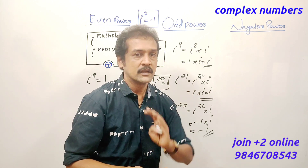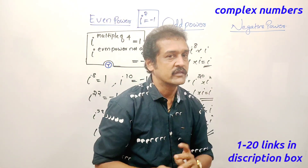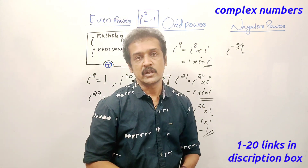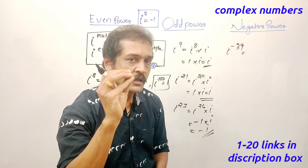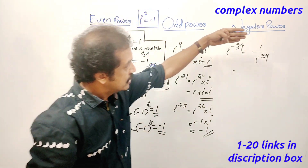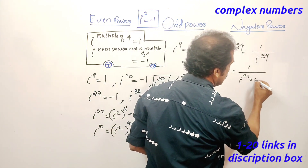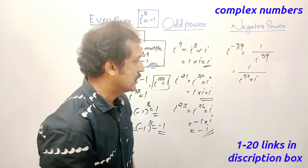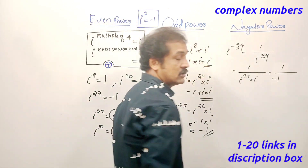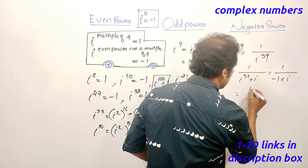Now, negative power — i raised to minus 39. Negative power is very important. i raised to minus 39 equals 1 divided by i raised to 39. We convert to positive power: 1 by i raised to 38 into i. i raised to 38 is minus 1 because 38 is not a multiple of 4. Therefore the answer is 1 by minus i.